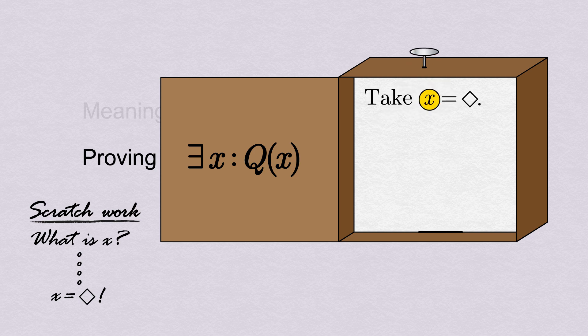With our x in hand, the first line of the proof itself just actively declares the value of x we want to take. Take x equals whatever explicit value we've found to get started. We don't need to give any reason or justification for the x we take. All that matters is that the rest of the proof works for that value of x.